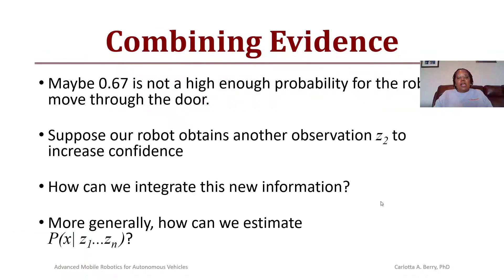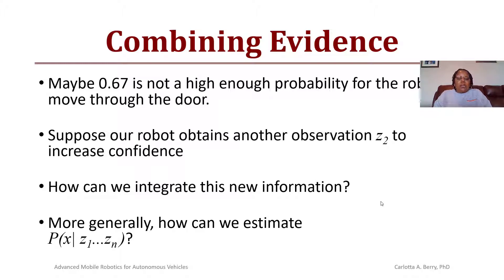The question becomes: what if 0.67 is not a high enough confidence for the robot to proceed through the door to fetch an object? You need a way to combine evidence or gather more evidence to increase the probability so the robot has a higher confidence. You could add another observation — take two readings, or use redundant sensing such as sonar and infrared or sonar and laser — and integrate this new information to estimate the probability of the door being open above 0.67.